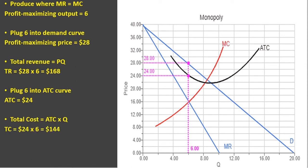The next step is to get total cost. Total cost is average total cost times quantity. So 24 times 6 gives this firm a total cost of $144.